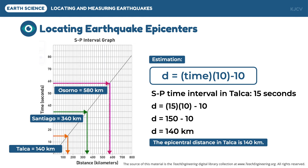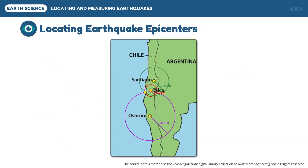Since we already have the epicentral distances for the three locations, we can now locate the epicenter on the map. When using digital mapping tools, automation is expected, but if done manually, scaling a compass depending on the map scale is necessary. This map shows the different epicentral distances drawn as radii for each location, and their intersection identifies the epicenter of the earthquake. This also shows the importance of using at least three locations — if we only use two, we will have two intersections.